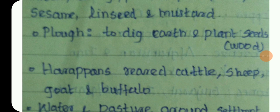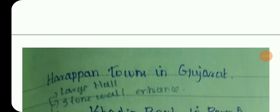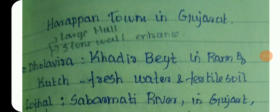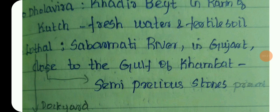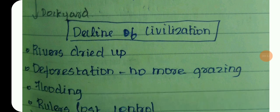Cattle, sheep, goat, and buffalo were raised. Towns in Gujarat had large halls and stone-walled entrances. Fresh water and fertile soil were available. The site is near a river in Gujarat along the Gulf of Khambhat. Semi-precious stones were also found, indicating a major trading hub.